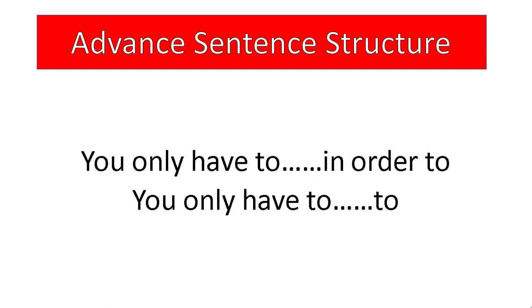Now, what we learn grammatically is the full structure, but native speakers shorten their sentences. They speak quickly and don't elaborate every word in detail. They join words together, which is also why their accent is sometimes hard to understand — because we say every word clearly, while they join words together. Both 'in order to' and just 'to' are correct.